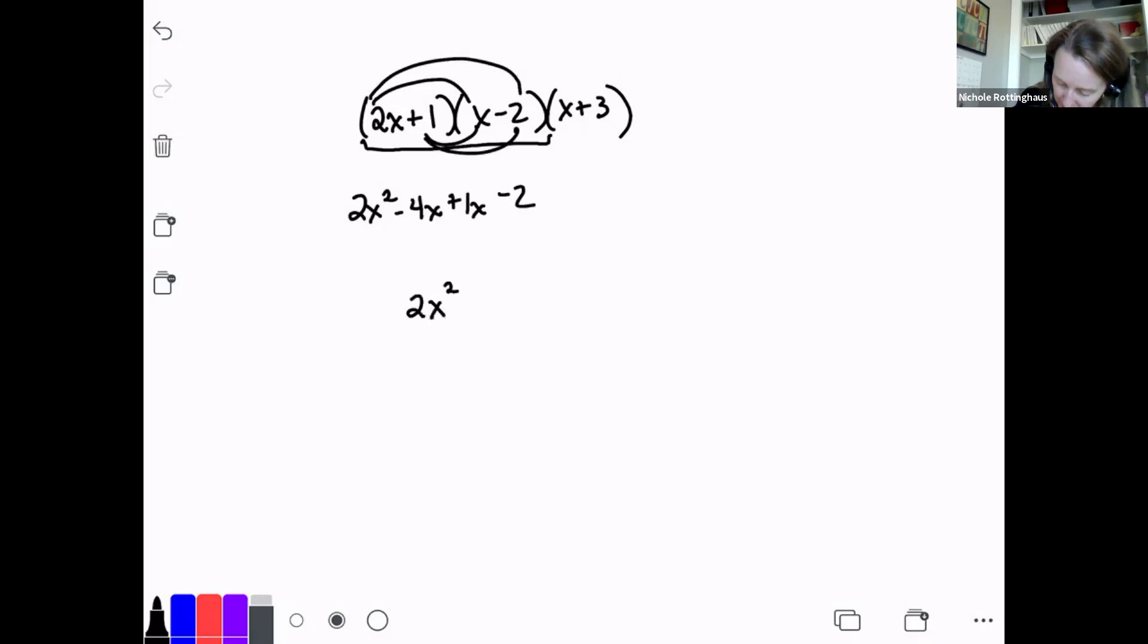Let's do 2x plus 1 times x minus 2 times x plus 3. So this one, I've got three binomials being multiplied together. This is similar to that one we did yesterday, where we need to pick two of them to multiply together first. And then when we get the trinomial, we'll multiply the third one. I'm going to multiply those two together first using foil. So this becomes 2x squared minus 4x plus 1x minus 2, or 2x squared minus 3x minus 2. And I have to multiply that times x plus 3.